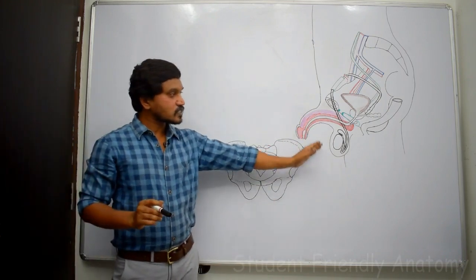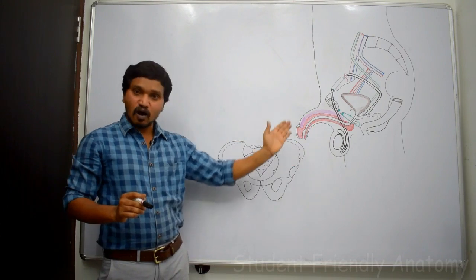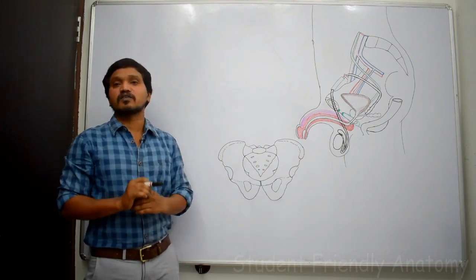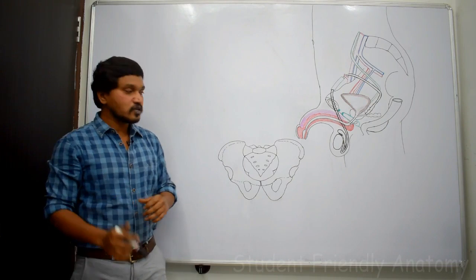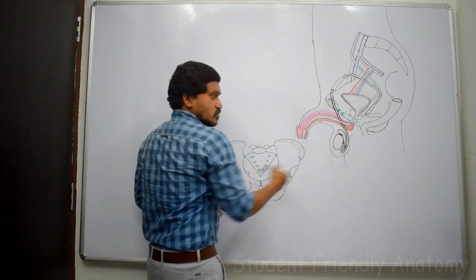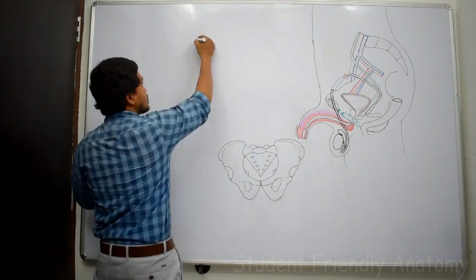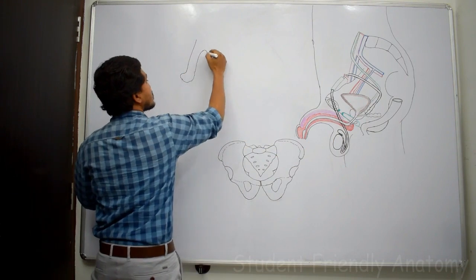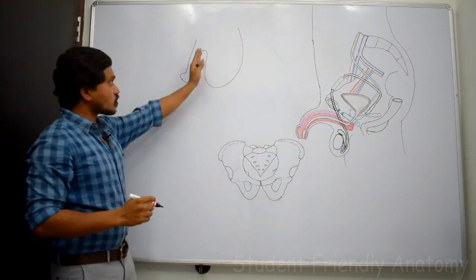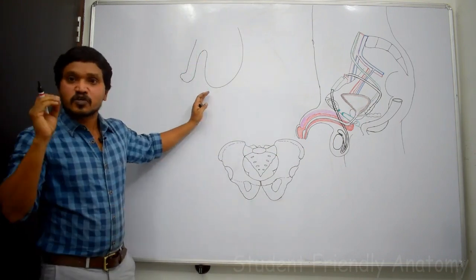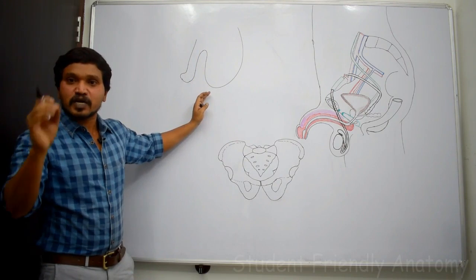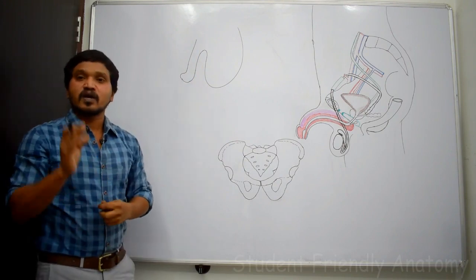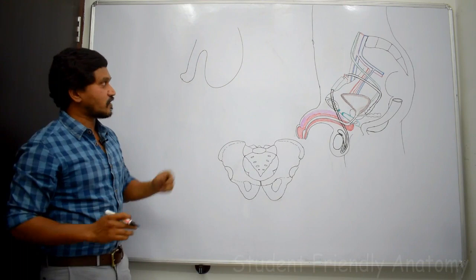That's why scrotal sac is present outside the pelvic cavity and in the lower part of the abdominal wall. Scrotal sac is a cutaneous, corrugated, pigmented sac. It is externally divided by one ridge or raphae.